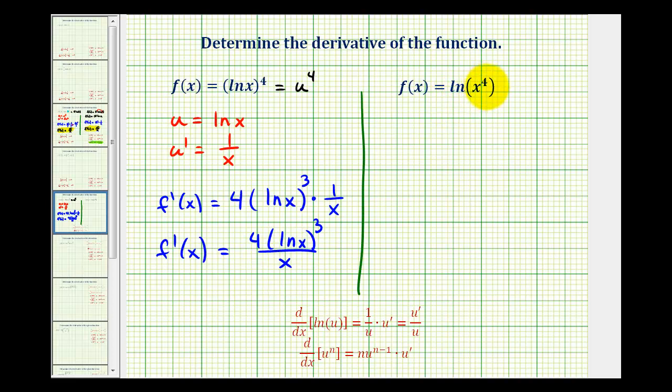Now for our second function, u is going to be equal to x to the fourth. Therefore, du dx, or u prime, is going to be equal to four x cubed.